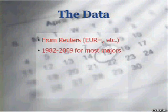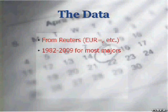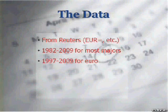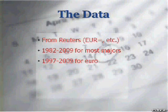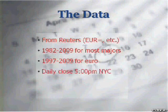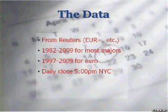The data in the study goes back to 1982 for most of the majors. Obviously, you exclude the euro because it wasn't created back then. The euro starts in 97. What Reuters does is they backfill using the old ECU, the European Currency Unit, which then became the euro. That was the peg. It uses a daily close, 5 p.m. New York time.